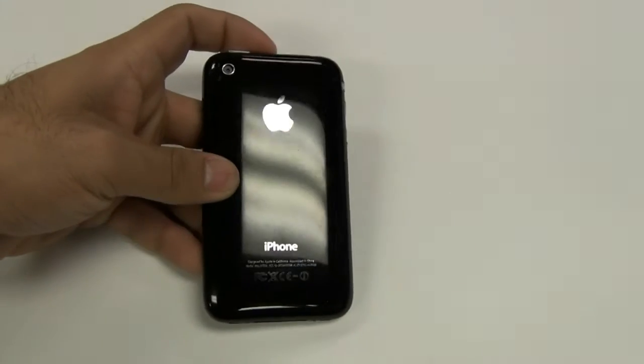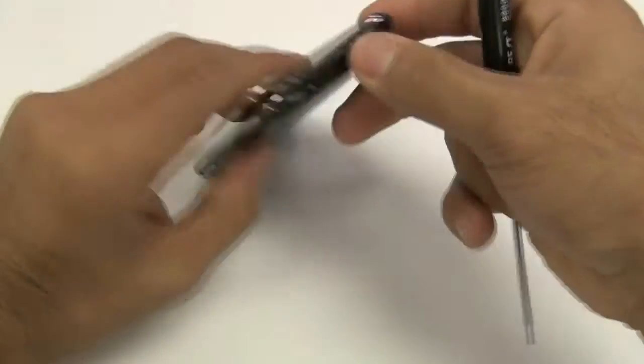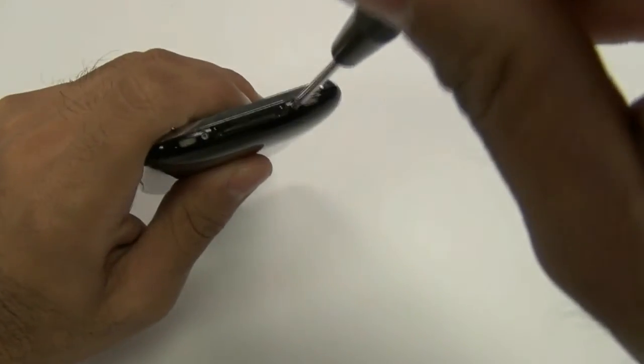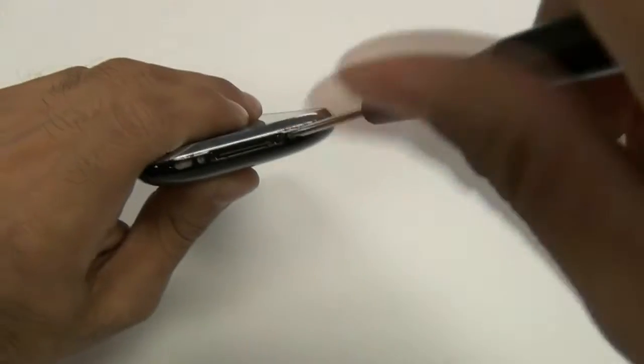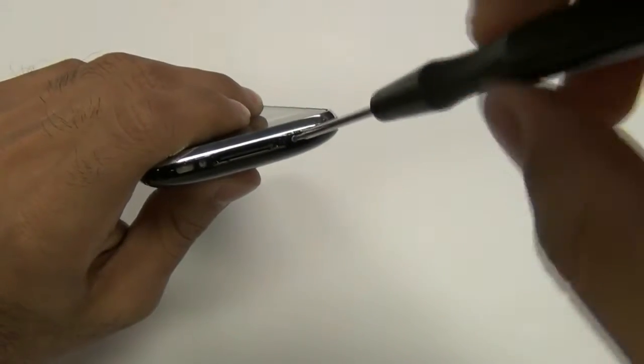To begin removing the touchscreen glass digitizer on your iPhone 3GS, first remove the two screws on the bottom of the phone.